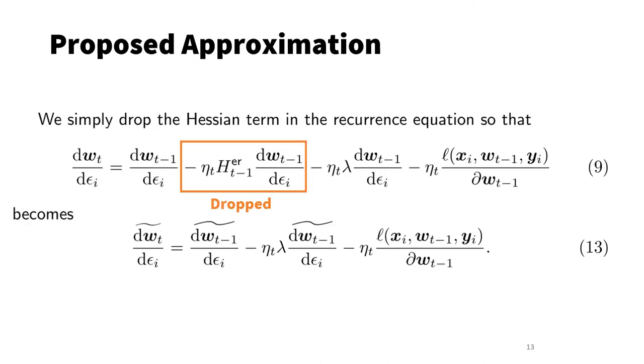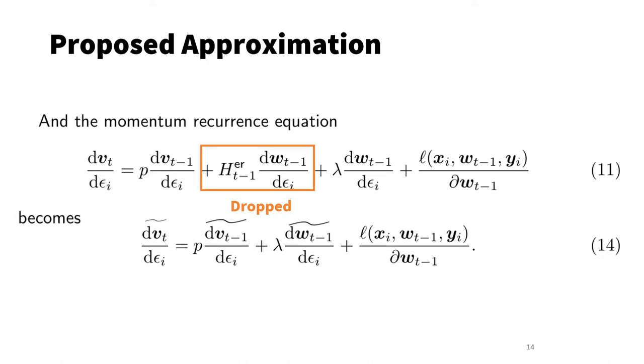In order to simplify computation and avoid dealing with the Hessian matrix, we propose an approximation technique that removes the need for the Hessian matrix. This method is really simple. Just drop the Hessian term, so that the above equation 9 becomes equation 13. Similarly, for SGD with momentum, equation 11 becomes equation 14, where the Hessian term is dropped.